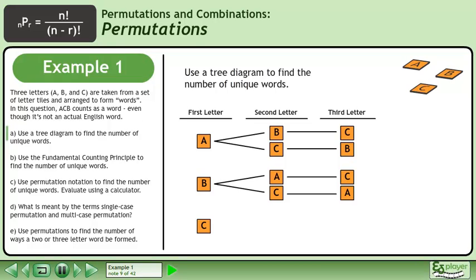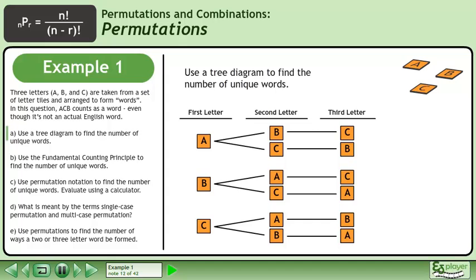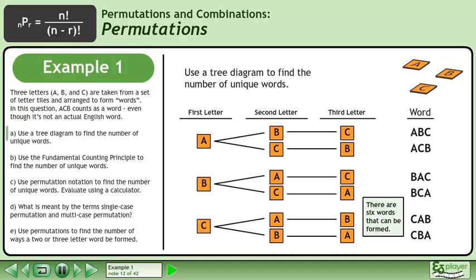In the final case, we'll begin with the letter C. The second letter tile could be A or B, and the third letter tile could be B or A. There are six words that can be formed.